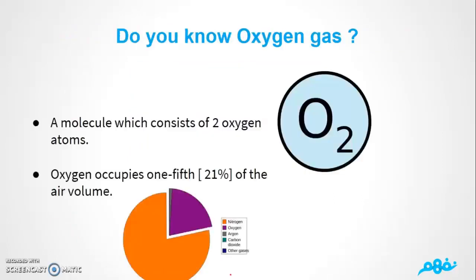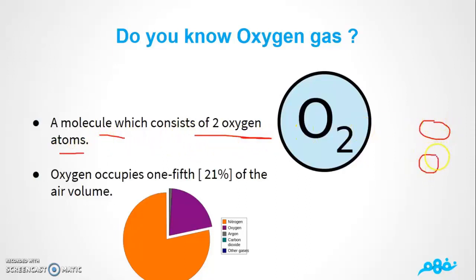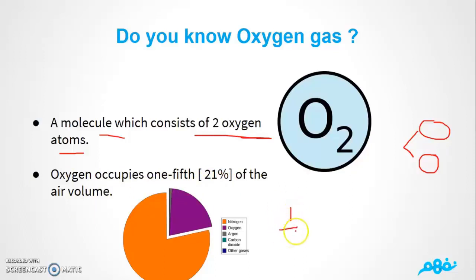Now we're going to talk about oxygen gas. You should know that oxygen gas is a molecule which consists of two oxygen atoms. Oxygen occupies one fifth, which means 21%, of the air volume.